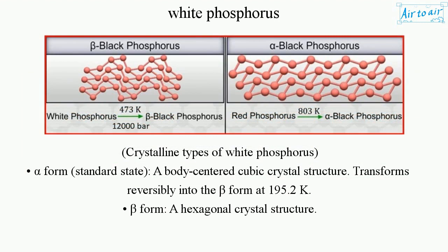Crystalline types of white phosphorus: the alpha form is the standard state, a body-centered cubic crystal structure. It transforms reversibly into the beta form at 195.2 K. The beta form has a hexagonal crystal structure.